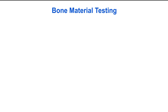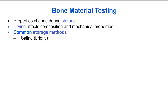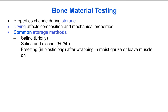Bone material can be tested ex vivo, but there are many considerations involved in bone testing. The properties of the bone change during storage — for example, drying affects its composition because bone is a third or more water, and therefore affects its mechanical properties. Common storage methods include storing bone in saline (only briefly), or in a mixture of saline and alcohol, or freezing in a plastic bag after wrapping in moist gauze and leaving muscle tissues on, which can help prolong the mechanical properties for testing.